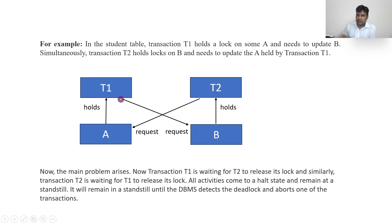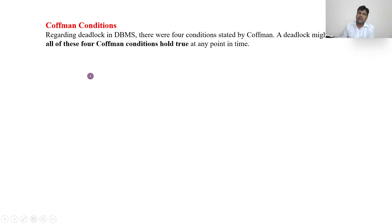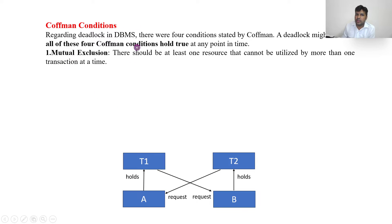Now, how can we say whether a situation is actually a deadlock? It must fulfill four conditions, known as the Coffman conditions. All four conditions must be true for us to confirm it is a deadlock situation.